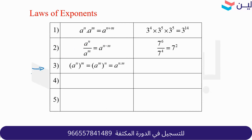It's called power of a power. If we have a to the n, all to the m, it's the same as a to the n times m — we just multiply the exponents. This is the most important one. Here is an example.